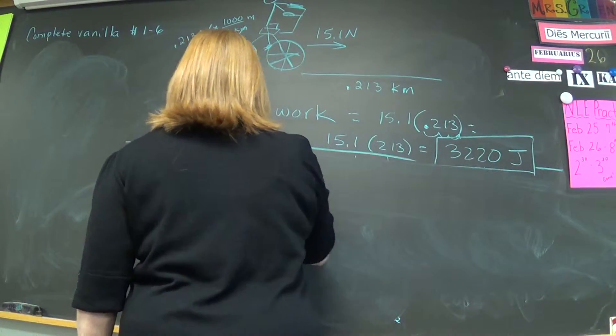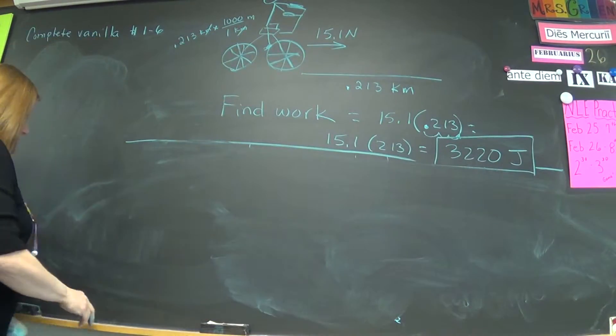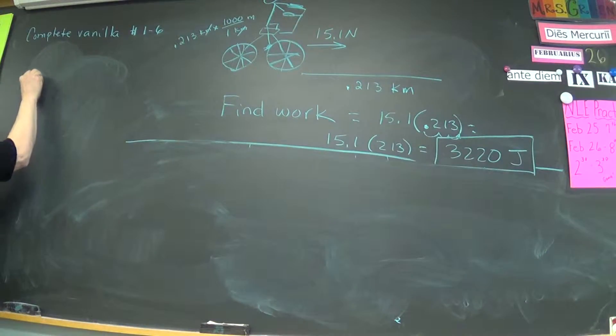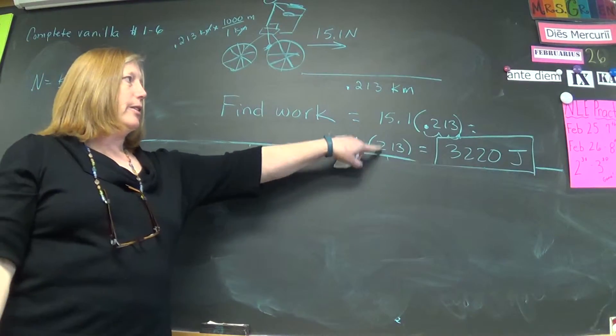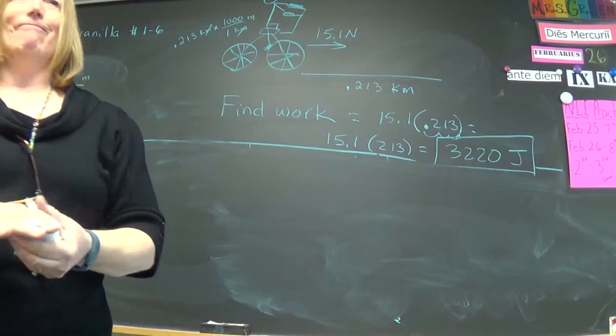I'll leave that up here. A Newton was a kilogram meter per second squared. That's why we had to work in meters, not kilometers.